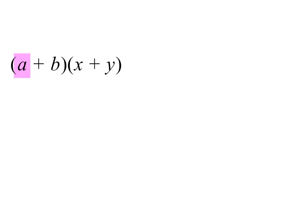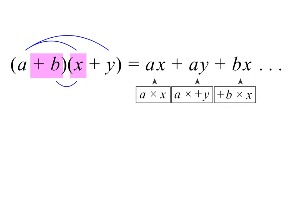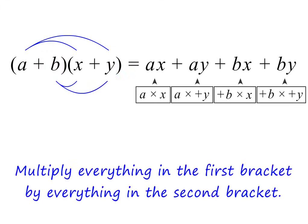We start with the first term in the first bracket and multiply it by the first term in the second bracket. This gives ax. We then multiply the first term in the first bracket by the second term in the second bracket — this gives plus ay. We now do the same for the second term in the first bracket: multiply it by the first term in the second bracket, giving plus vx, and then by the second term, giving plus vy. We have now multiplied everything in the first bracket by everything in the second bracket, and we can't simplify further because there are no like terms.